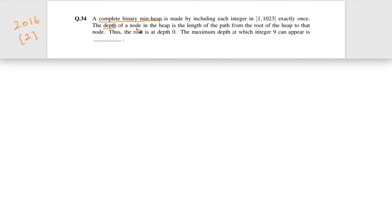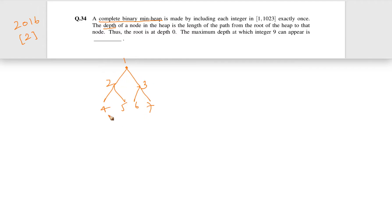Now they are defining depth. The depth of a node in the heap is the length of the path from the root of the heap to that node. Let us consider a heap with elements 1, 2, 3, 4, 5, 6, 7. Here we see 7 elements and this is a complete binary min heap. We can see that there are 7 elements, which is 2 cubed minus 1.